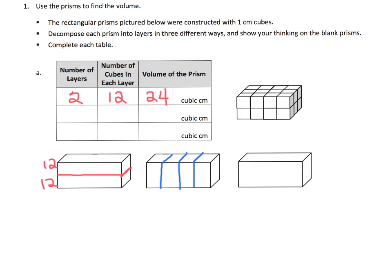So there's going to be six cubes here, six cubes here, six cubes, and six cubes. How many layers? There are four layers. How many cubes in each layer? Six. And there's 24 cubic centimeters as the volume.